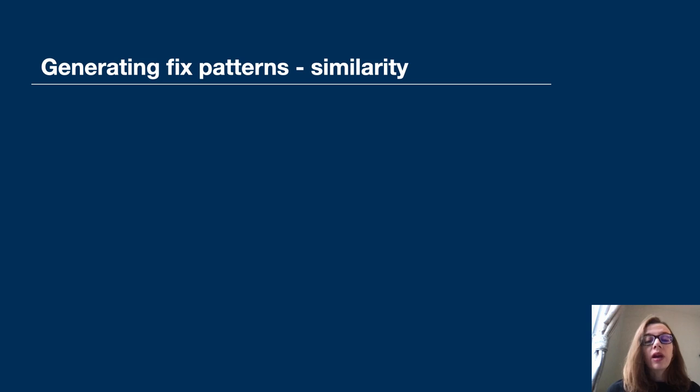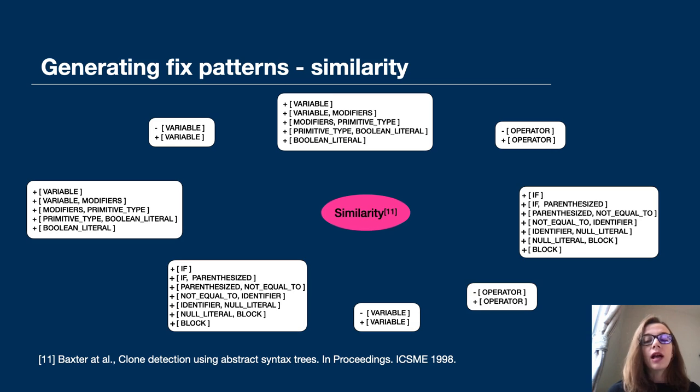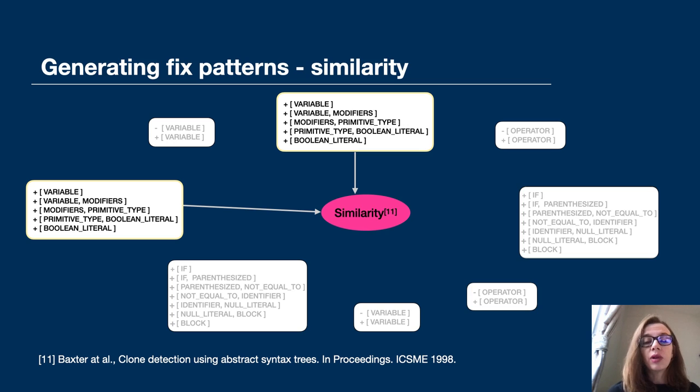Then we compare n-grams generated from different bug fixes, and we calculate their similarity based on Baxter's similarity formula. Using n-grams ensures that the similarity formula includes the similarity between buggy and fixed AST kinds, and also it includes the similarities in the order of neighbor nodes that form n-grams. So we calculate the similarity between fixes, and we find similar fixes.